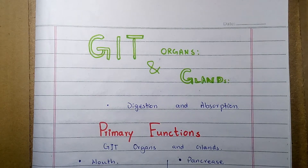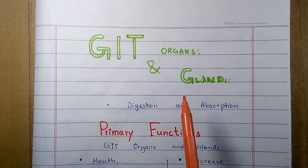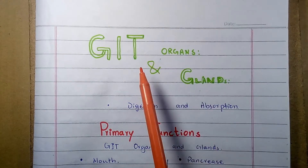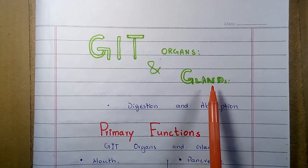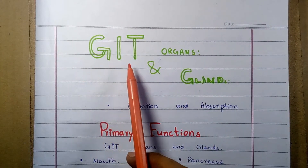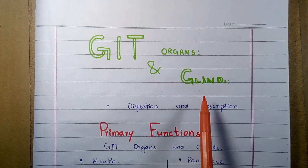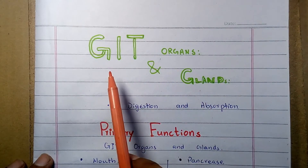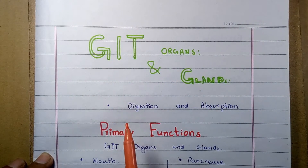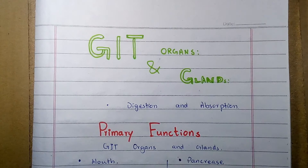Welcome to my channel. In this video I am going to discuss the primary or basic functions of the gastrointestinal tract organs and glands that take part in the digestive system of the body. Before moving toward the primary functions, the digestive system is a collection of organs that work together to digest and absorb food taken in by the human body.